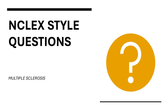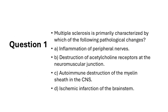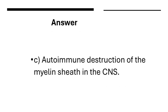NCLEX Question 1: Multiple sclerosis is primarily characterized by which of the following pathological changes? A. Inflammation of peripheral nerves. B. Destruction of acetylcholine receptors at the neuromuscular junction. C. Autoimmune destruction of the myelin sheath in the central nervous system. D. Ischemic infarction of the brain stem. The answer is C — autoimmune destruction of the myelin sheath in the central nervous system.